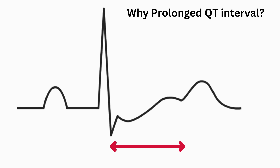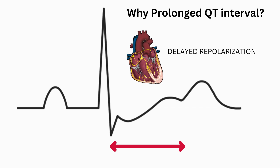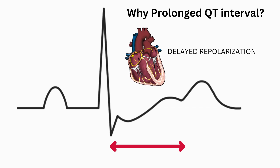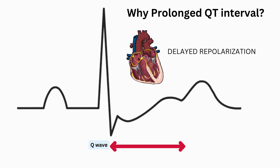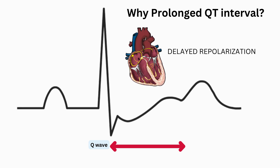But why the prolongation of the QT interval? As for the prolonged QT interval, it's due to delayed repolarization. With low potassium levels, it takes more time for the ventricles to repolarize fully. This elongates the interval between the beginning of ventricular depolarization — the Q-wave — and the end of repolarization — the T-wave — on the ECG.